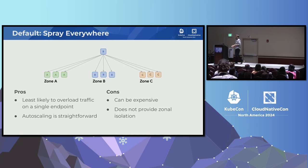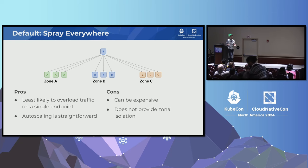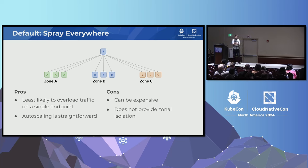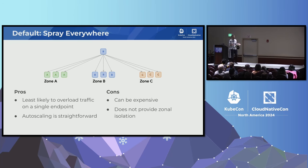The pros of that default approach is it's least likely to overload traffic to a single endpoint, and autoscaling is more straightforward — less complicated than when you start to add some preference about where traffic goes. On the con side, if you use a cloud provider where traffic going across zones is expensive, this approach can be rather expensive. And if you want to isolate your applications across zonal boundaries, this doesn't work very well for that.